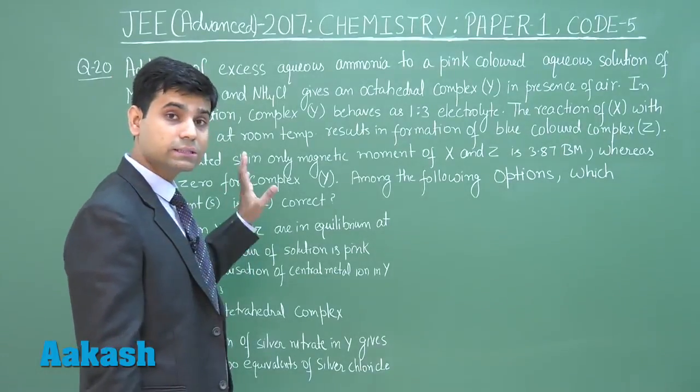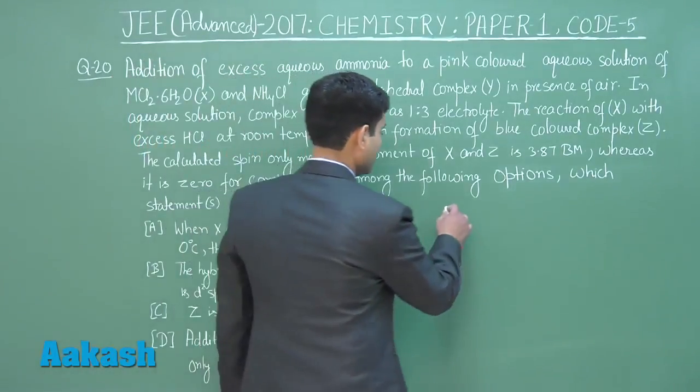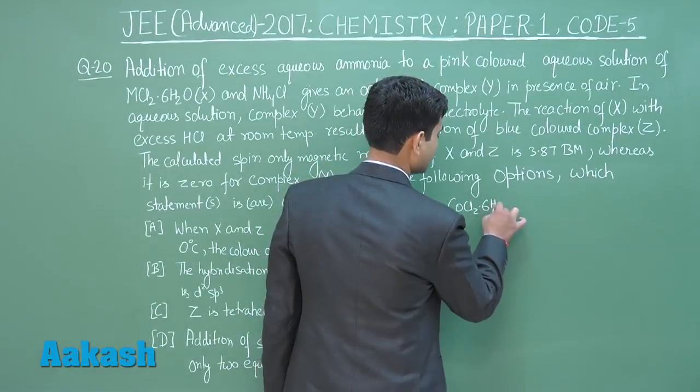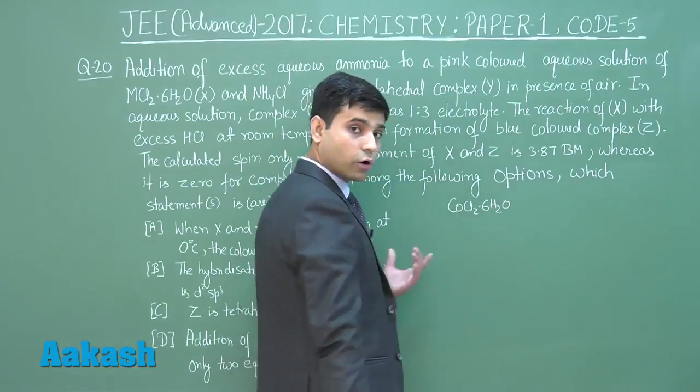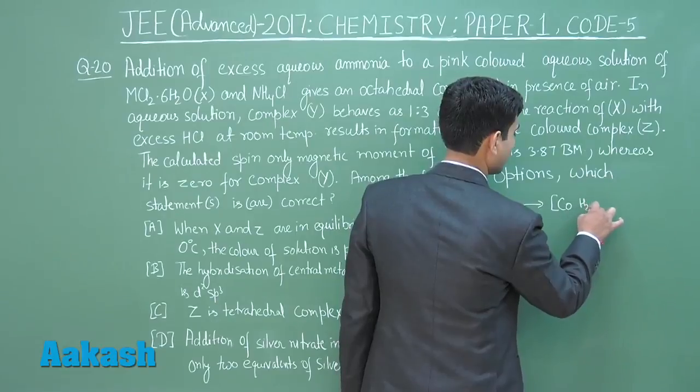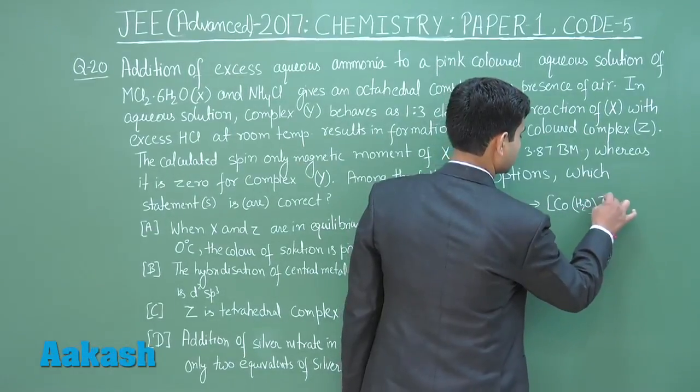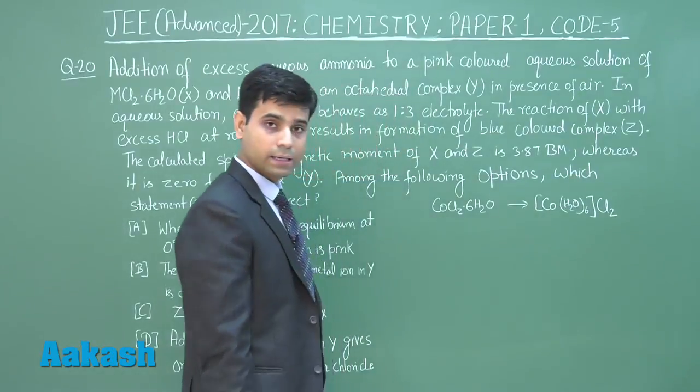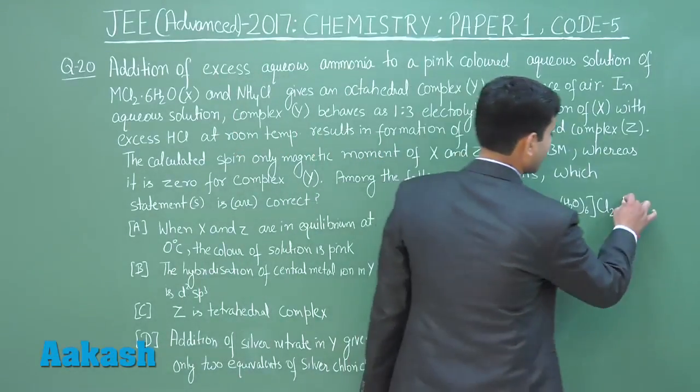We have MCl2.6H2O which is pink. This complex can be CoCl2.6H2O, or in complex form it can be written as [Co(H2O)6]Cl2. This is our pink colored complex.